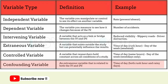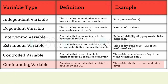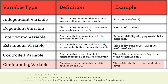With confounding variable: imagine a scenario where an extraneous variable is affecting both the independent and dependent variables — for example, time of day, where at different times there is sometimes heavy traffic, sometimes not, and sometimes heavy rain, sometimes not. So this is something that is impacting both our independent variable and dependent variable, making it a confounding variable.